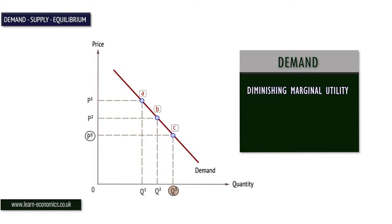Demand can also be explained in two other ways. If budgets are fixed, a lower price means more can be consumed, providing more real income. If prices of substitutes are constant, a lower price of goods encourages substitution. The two effects are called the income effect and substitution effect.